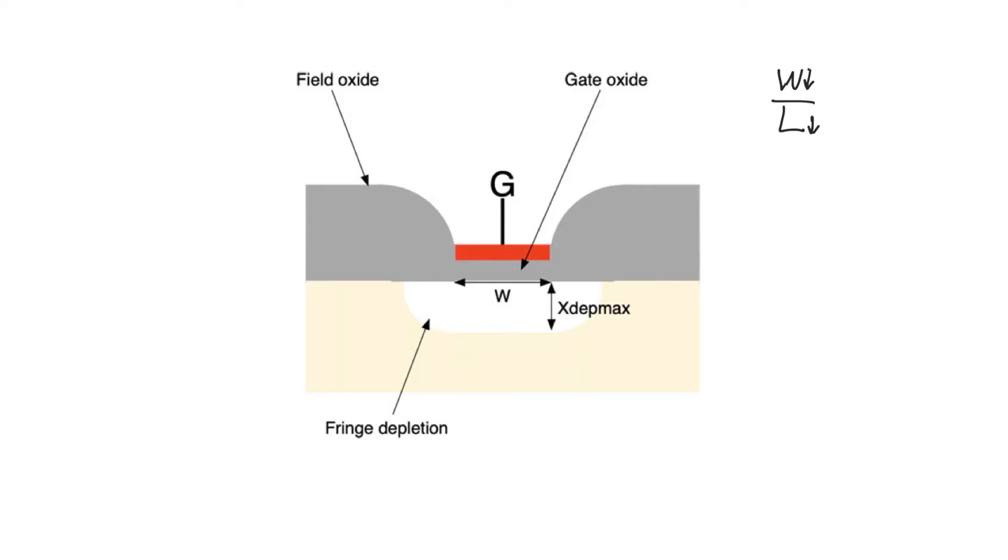With drain-induced barrier lowering, we were concerned about the depth of the drain in relation to the channel. The danger of this is that it forces us to use two-dimensional field models when solving for the channel. But we went around this by just taking the effect of drain-induced barrier lowering separately and keeping our one-dimensional model intact.